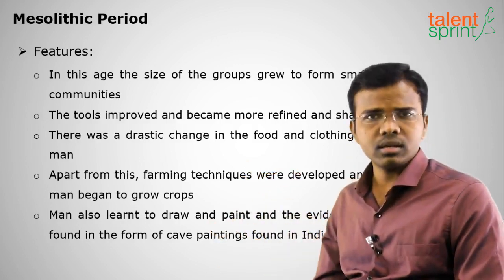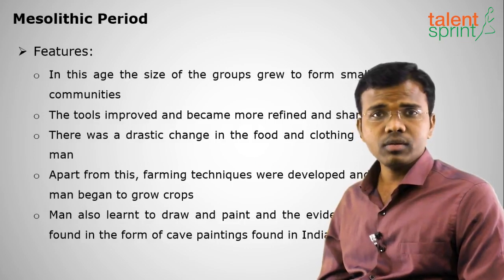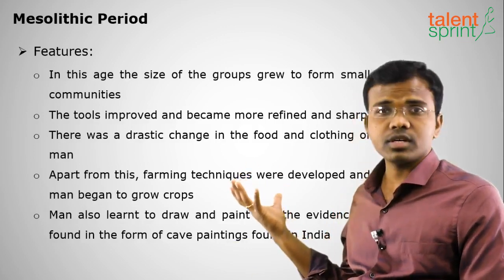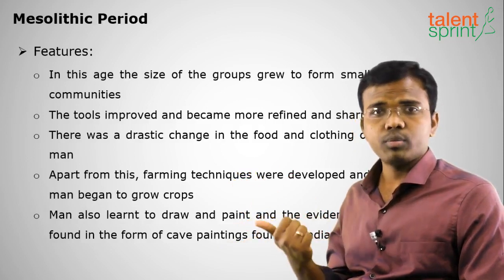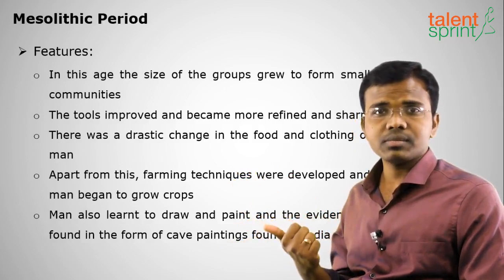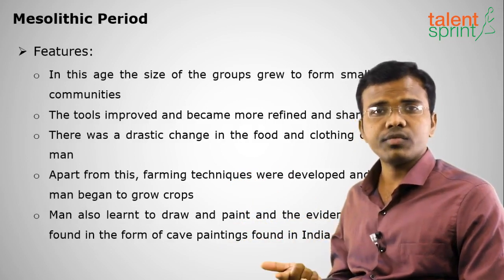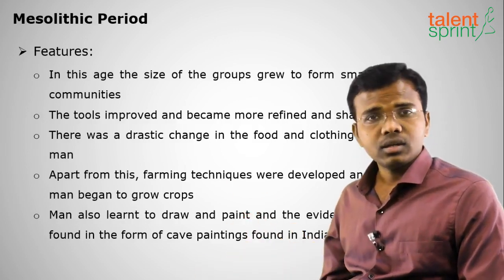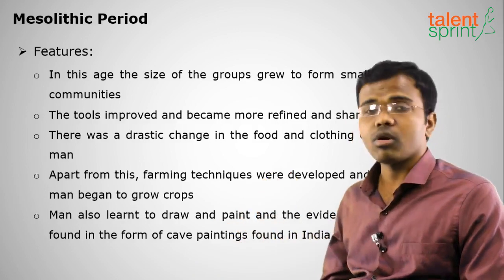Earlier humans used to wander here and there, but in the Mesolithic period they learned to live in small communities. To summarize, the drastic changes in the Mesolithic period were: developing farming and food-producing mechanisms, sharpening tools, drawing and painting, and living in small communities.